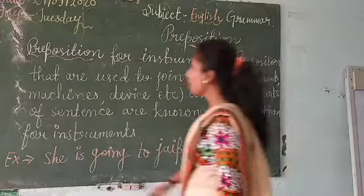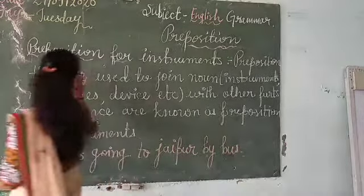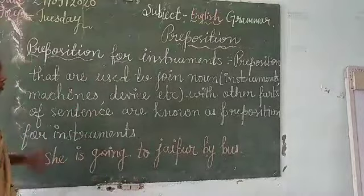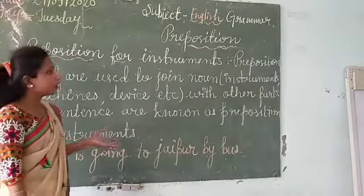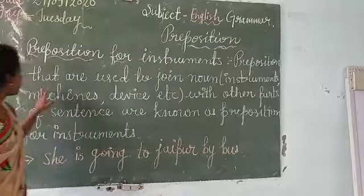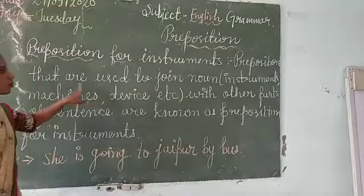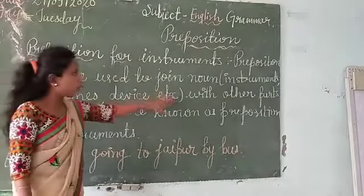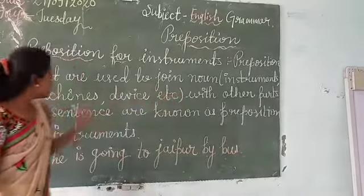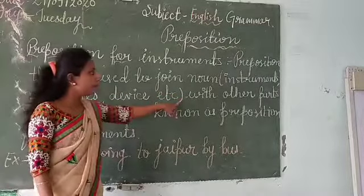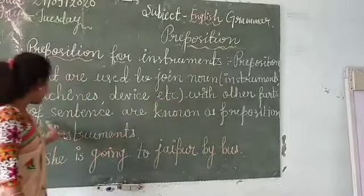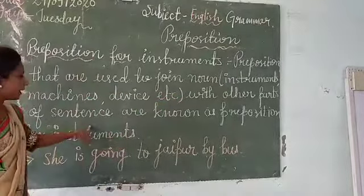This last part is the prepositions for instrument. What is the preposition for instrument? Prepositions that are used to join a noun, instrument, machine, device, and so on with another part of a sentence.